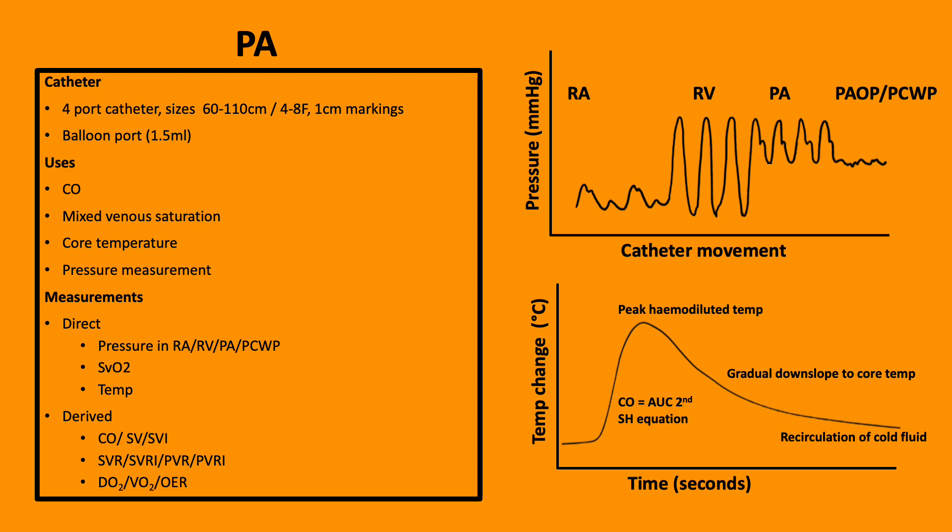The pulmonary artery or Swan-Ganz or right heart catheter is a catheter which comes in a range of sizes, commonly up to 110 centimeters with one centimeter markings which move through the right side of the heart into the pulmonary artery system.